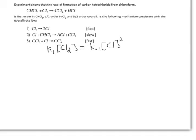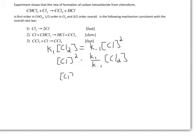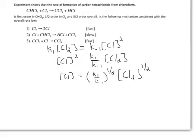My goal is to solve for the concentration of Cl. I'll first divide both sides by K-1, so that means Cl squared is equal to K1 over K-1 times the concentration of Cl2. Then I'm going to take the square root of both sides, so Cl is equal to K1 over K-1 to the one-half power times Cl2 to the one-half power. Now we're going to take our expression for Cl and plug it back into the rate law for step 2.